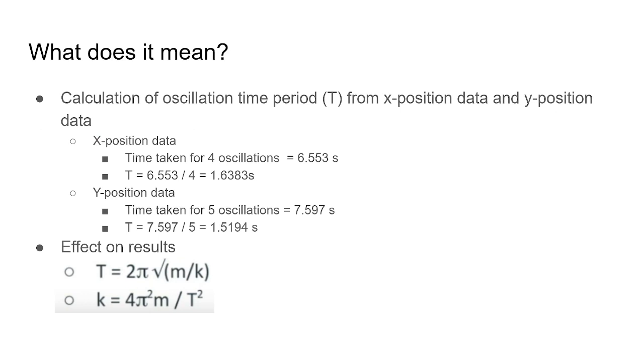Earlier, there was a discrepancy in the observed versus predictive data for x position. This could be solved by calculating the time period for oscillation in the x direction, and then using that value to calculate the spring constant, and using the computational model.